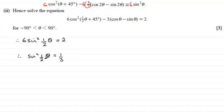And then I'm going to square root both sides, so therefore we'd have sin(½θ) is equal to plus or minus the square root of 1 third, which will be the square root of 1, which is 1, divided by the square root of 3. So we've got plus or minus 1 over root 3.